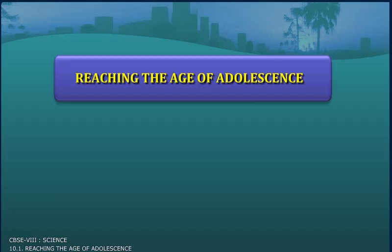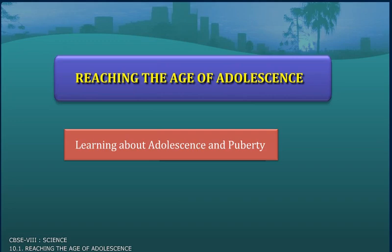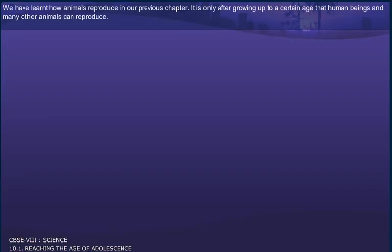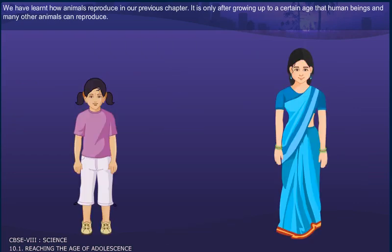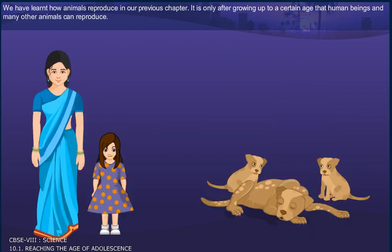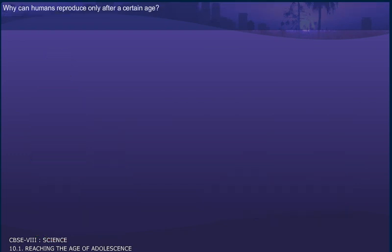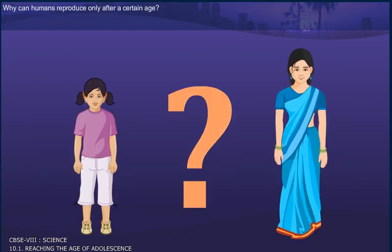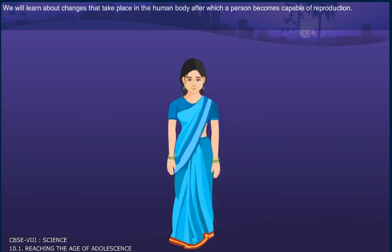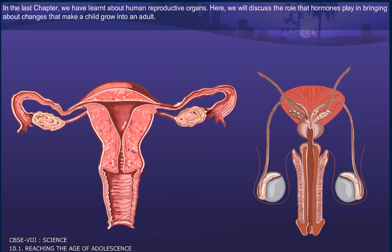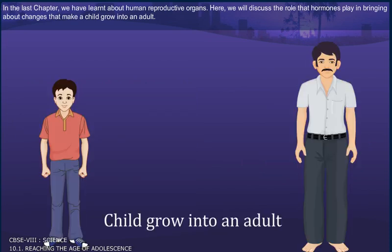Reaching the Age of Adolescence: Learning about Adolescence and Puberty. We have learned how animals reproduce in our previous chapter. It is only after growing up to a certain age that human beings and many other animals can reproduce. Why can humans reproduce only after a certain age? We will learn about changes that take place in the human body after which a person becomes capable of reproduction. In the last chapter, we learned about human reproductive organs. Here, we will discuss the role that hormones play in bringing about changes that make a child grow into an adult.